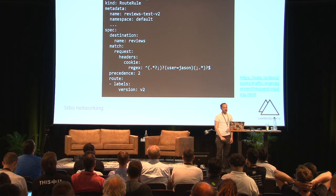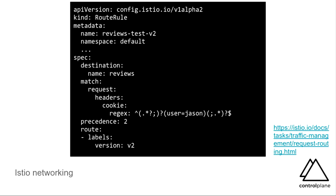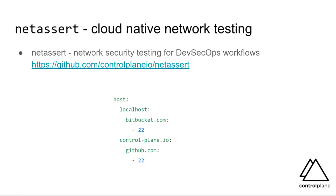Istio networking performs some of the same functions as network policy — it will give you point-to-point RBAC. It is essentially a zero-trust networking model because we authenticate and authorize every single request with mutual TLS, bootstrapped by SPIFFE. SPIFFE has just been integrated in HashiCorp's Consul — two days ago — meaning Consul and Istio can theoretically communicate because SPIFFE is used as the identity framework.